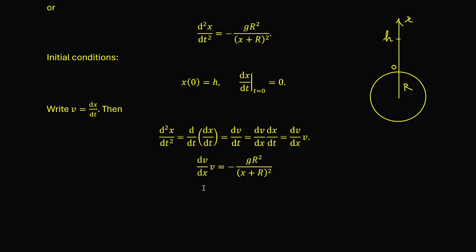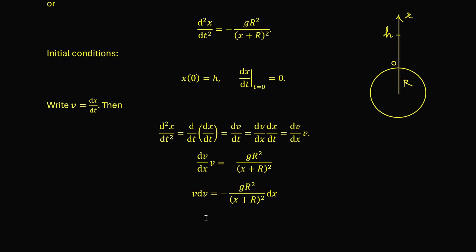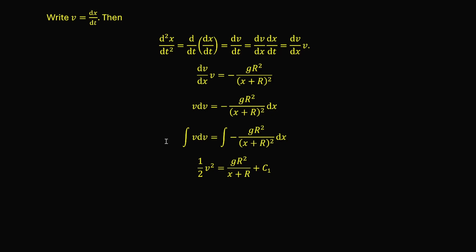So the differential equation becomes dv/dx times v equals minus gr² over (x + r)². We use the method of separation of variables to solve it. Separating the variables v and x to each side, we have v dv equals minus gr² over (x + r)² times dx. We then integrate both sides. The integral of v dv gives ½v², and integrating the right-hand side gives gr² over (x + r) + c₁, where c₁ is an arbitrary integration constant.